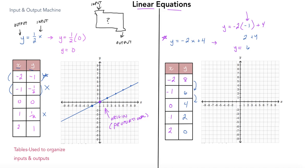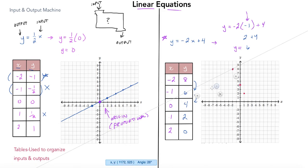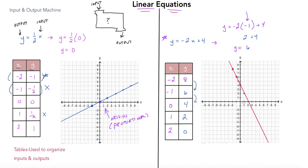Now I'll plot those points on the graph. Negative 2, 8 is a point up here; negative 1, 6; then 0, 4; then 1, 2. Connecting all those inputs and outputs, you can see it again creates a straight line — that's what makes this a linear equation. The difference here is that this line does not pass through the origin, so this is considered a non-proportional relationship.